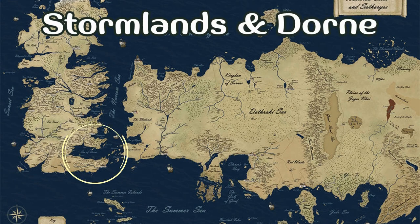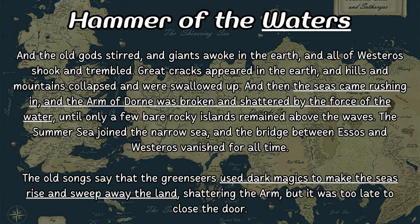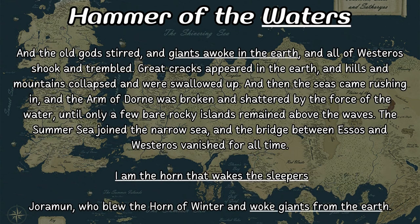Mandela effect aside, the hammer of the waters controlled the waters — it didn't control the earth. As we can see in both instances where the event is described, the waters moved and shook, shattered and swallowed the earth. In my horns video I said that the hammer of the waters was most likely a horn, and now I believe even more that this is the case. Not only do hammers and horns parallel each other all over the books, but the words used to describe the hammer are almost identical to the vow of the Night's Watch: 'I am the horn that wakes the sleepers' — something that makes sense to be about the Horn of Winter.